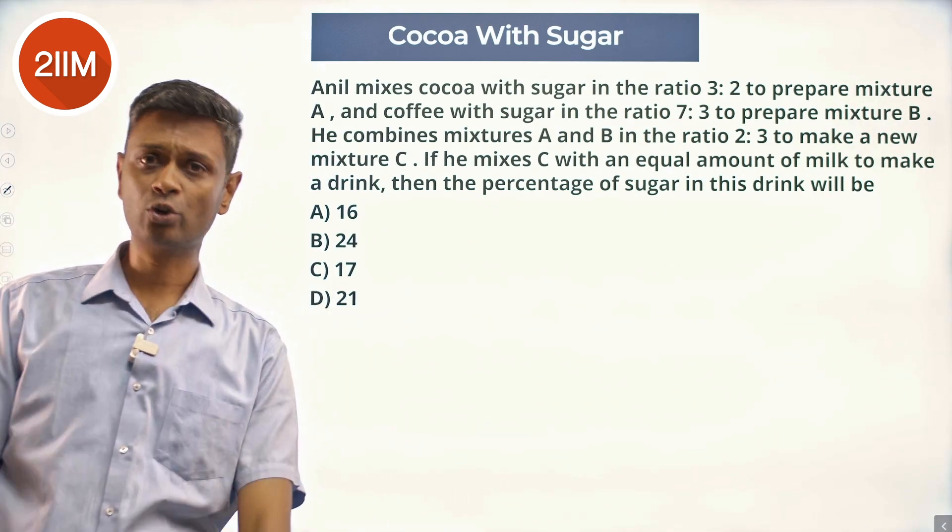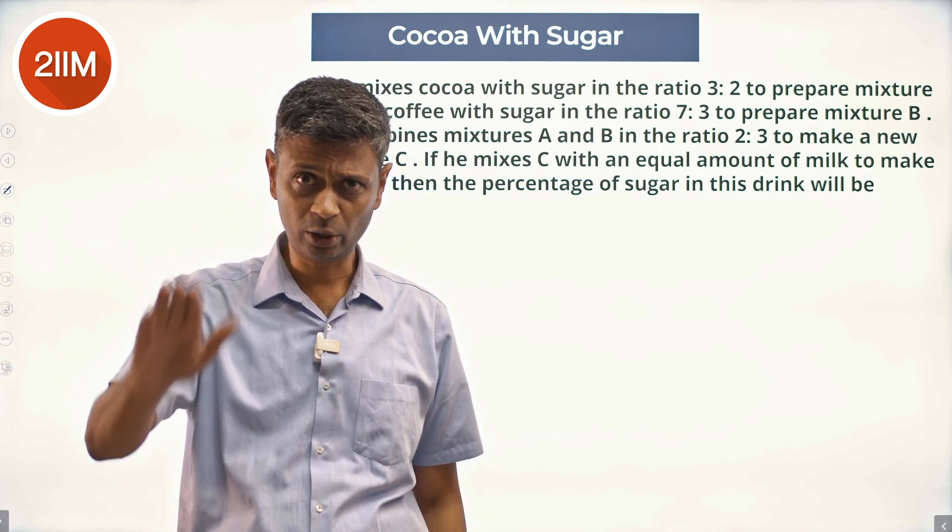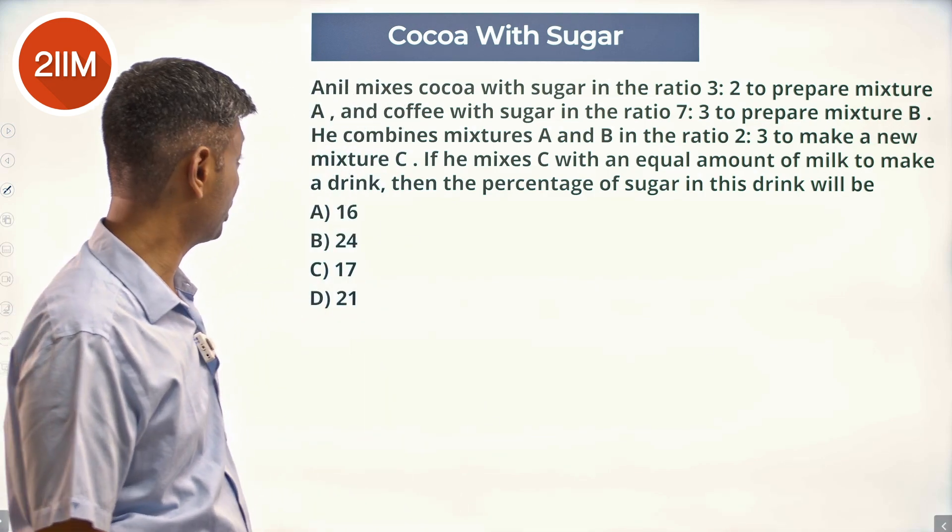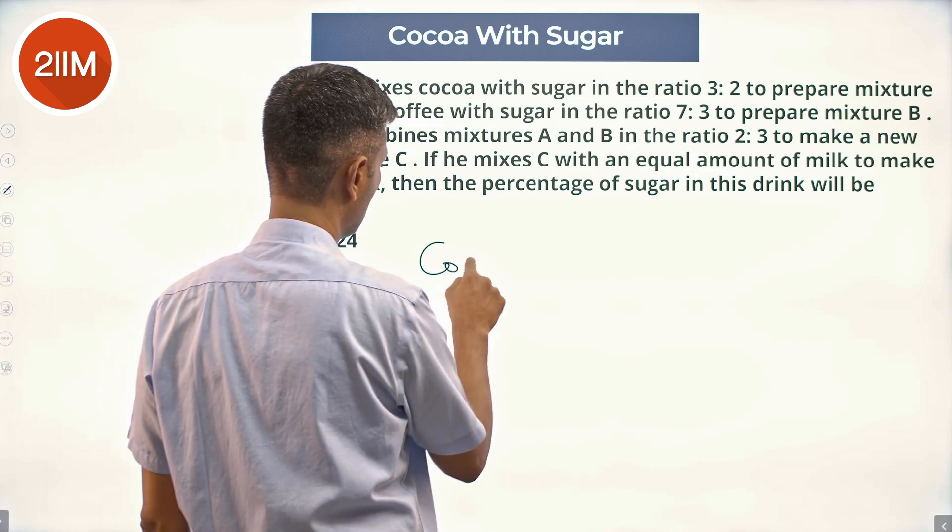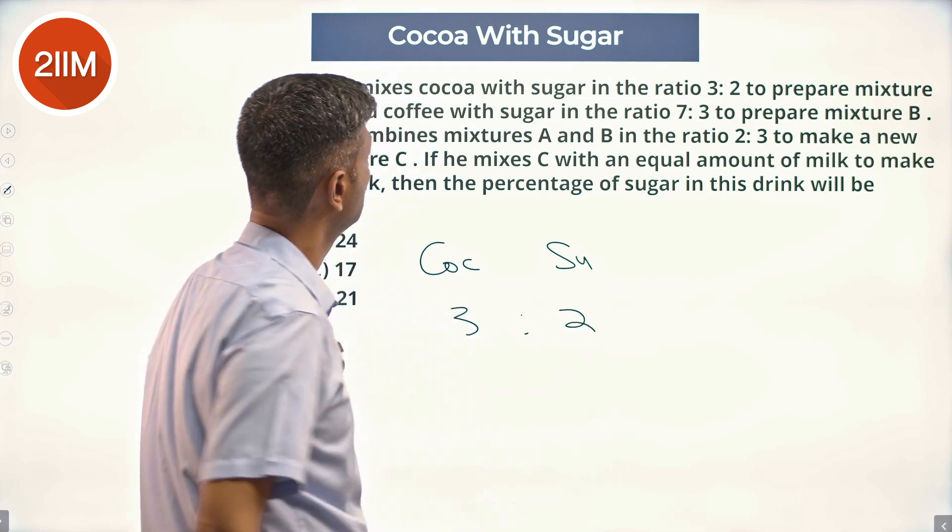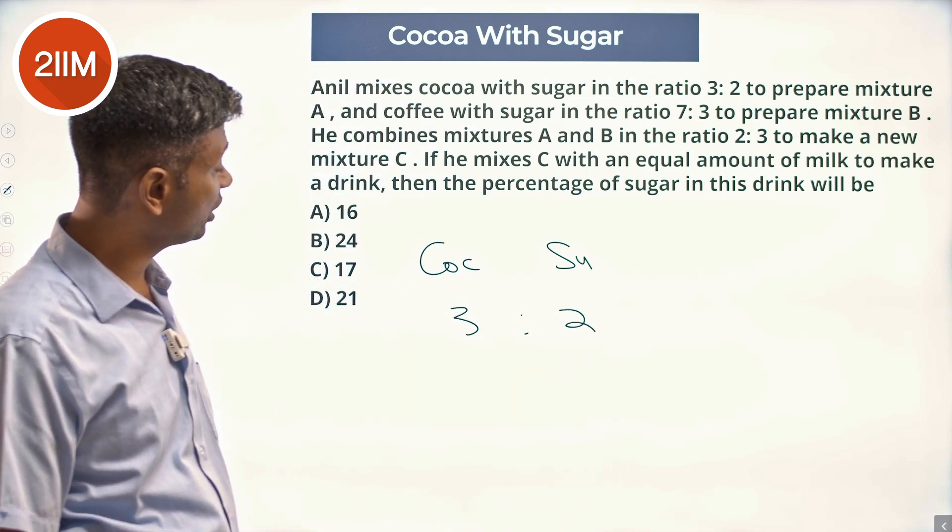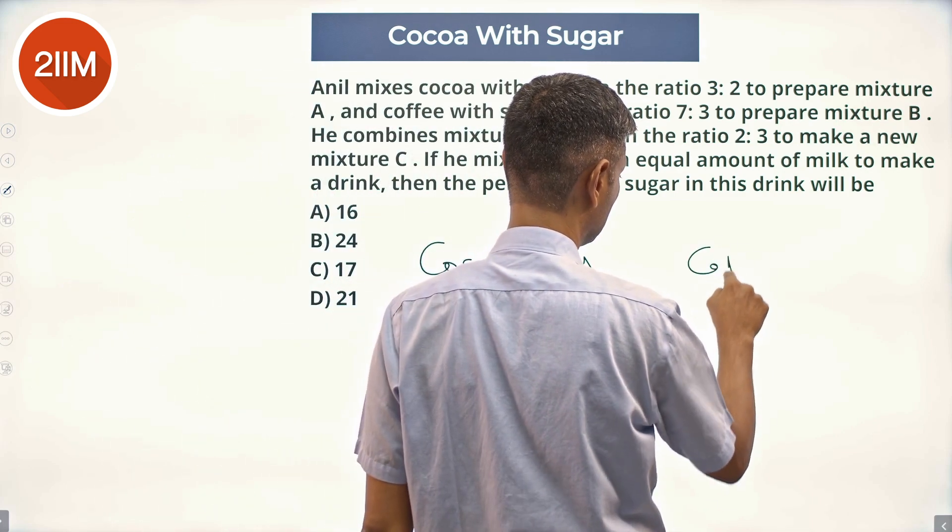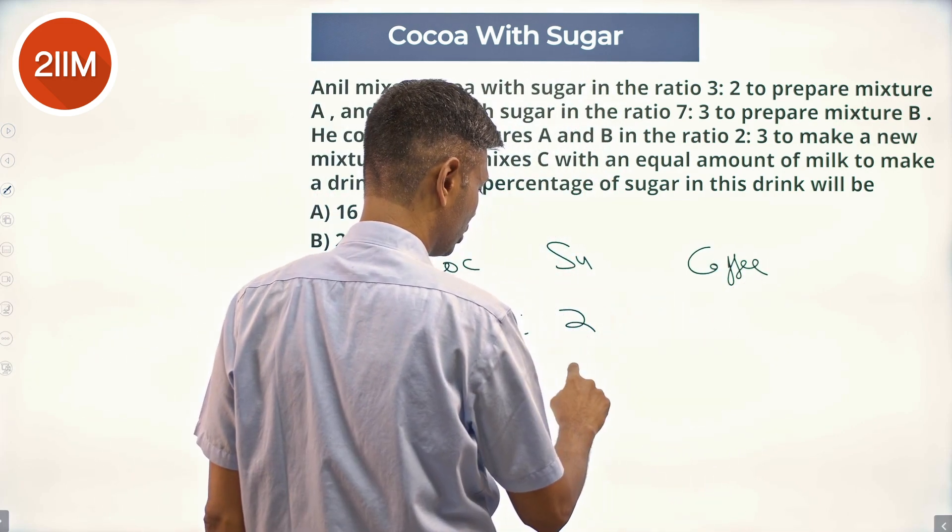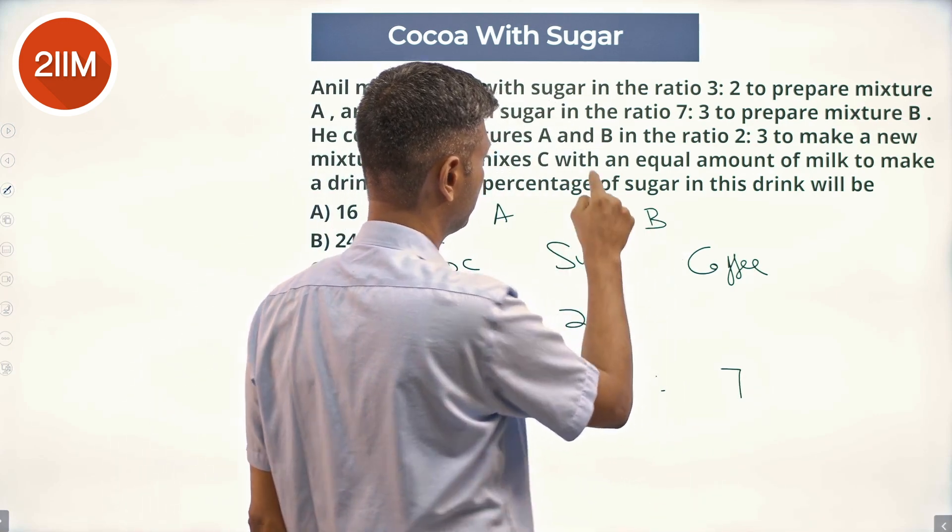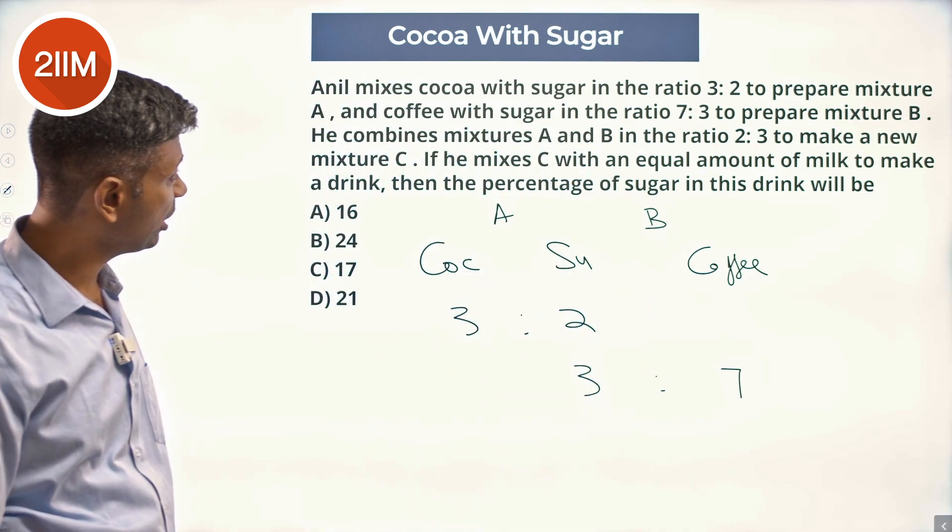I'm redoing this question. Anil mixes cocoa with sugar in the ratio 3:2 to prepare mixture A, so cocoa with sugar 3:2. And coffee with sugar in the ratio 7:3, so sugar and coffee 7:3, so 3:7. This is mixture A, this is mixture B.